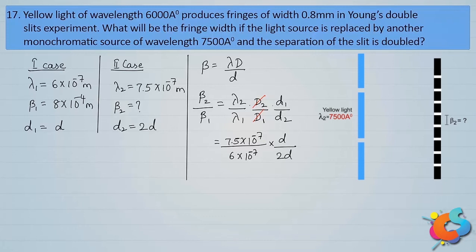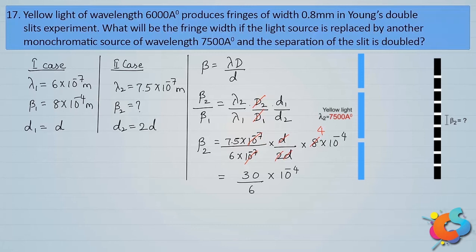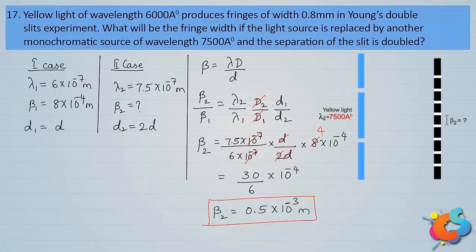Taking β₁ = 8×10⁻⁴ to the right-hand side, we cancel the 10⁻⁷ terms. Then 7.5×4 = 30 in the numerator, divided by 6, gives 5, with a factor of 10⁻⁴. So β₂ = 0.5×10⁻³ m = 0.5 millimeters. The new fringe width is 0.5 millimeters.